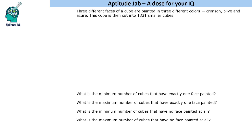Hello everyone, welcome to Aptitude Jab. This is a set based on painting of cubes. It says that three different faces of a cube are painted in three different colors: crimson, olive, and azure. For those who do not know these colors, crimson is a type of red, olive is a type of green, and azure is a type of blue.